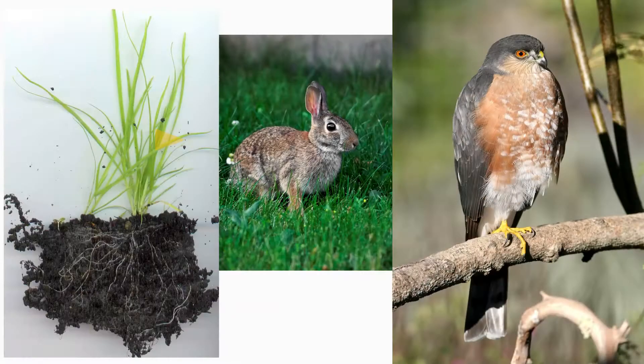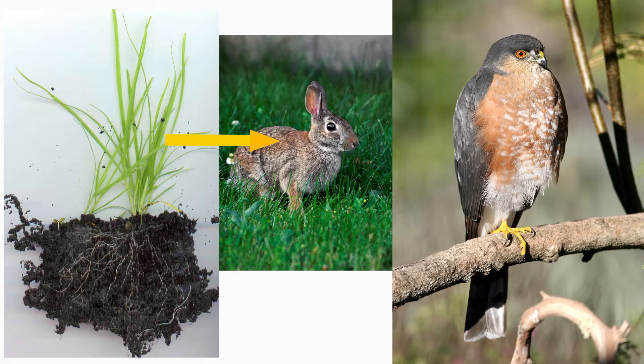Now the real lesson you're supposed to learn from a food chain is that plants are the producers and the energy from the sun that they capture gets passed on to the herbivores and then passed on to the carnivores and omnivores so that almost all life on earth is ultimately powered by the solar energy that plants capture.